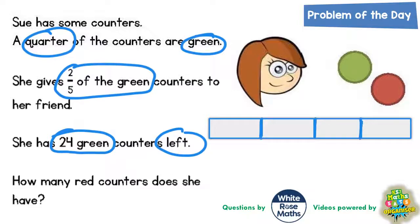And since we're talking about green and red counters we might as well color code it as well so we know what we're talking about. So a quarter of the counters are green so let's shade in the first quarter being green. And that means the rest of the counters must be red because we're only actually told about green and red counters. So the other three quarters must be red.